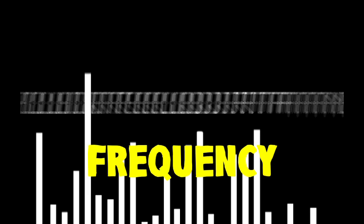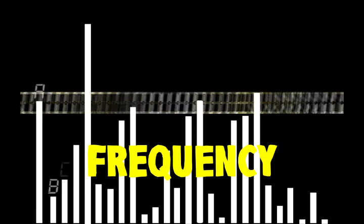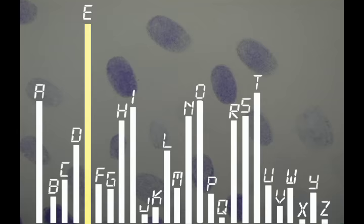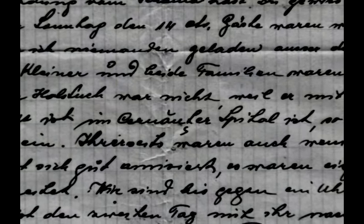If you scan text from any book and count the frequency of each letter, you will find a fairly consistent pattern. For example, these are the letter frequencies of English. This can be thought of as a fingerprint of English. We leave this fingerprint when we communicate without realizing it.